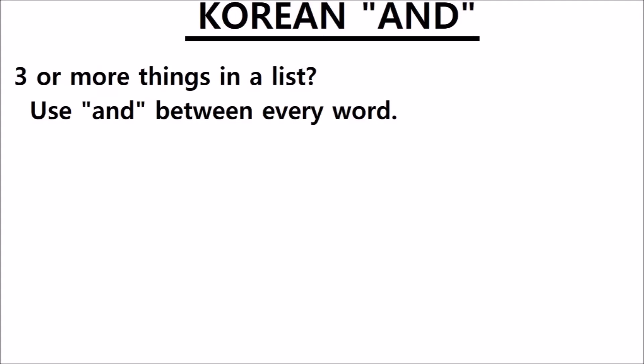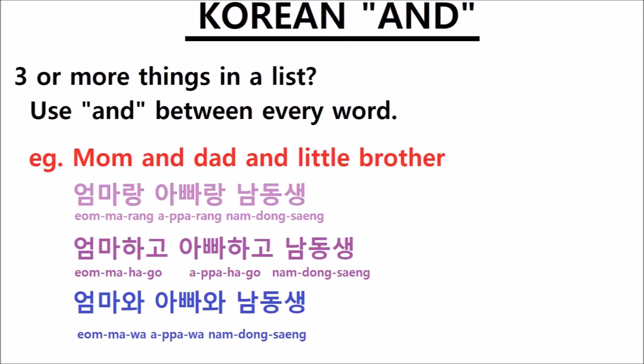Now, what if you have three or more things in a list? In Korean, you have to put 'and' in between every word. For example: 'mom and dad and little brother.'